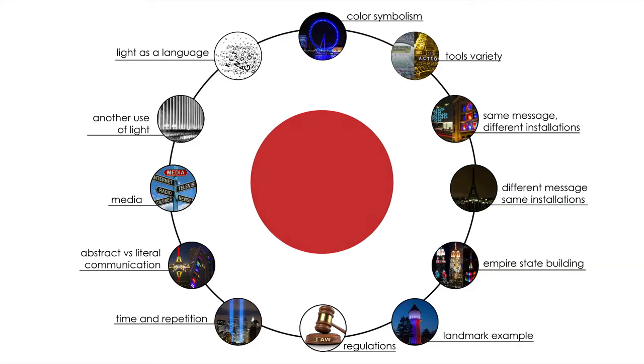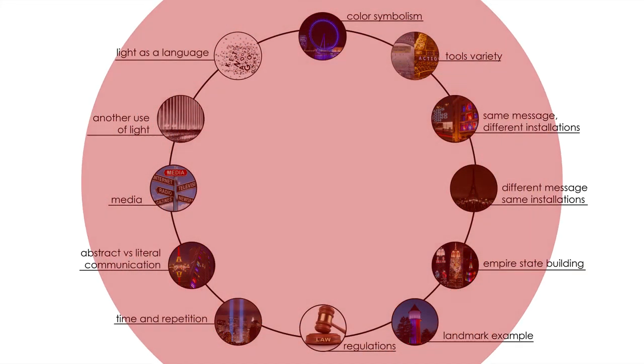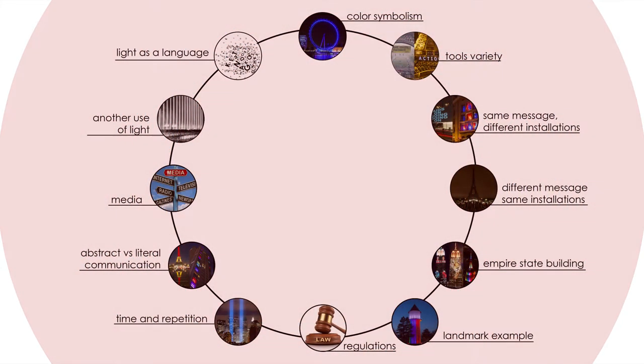The next chapter is a discussion which is divided into 12 categories. They critically evaluate findings and connect the case studies with the background research. In the end, it is justified that light under a certain context is an attractive medium suitable for raising awareness, communicating messages for local and global issues and creating social engagement in the urban space.